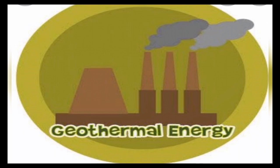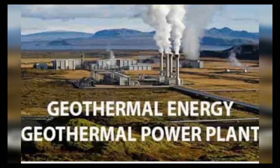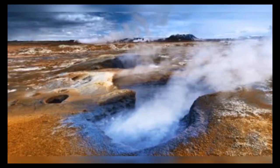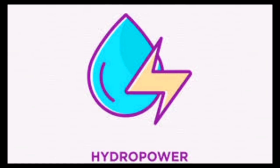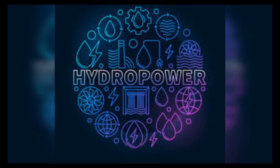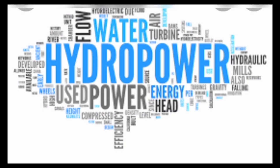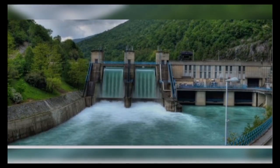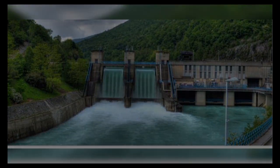Geothermal energy is the energy harnessed within the earth. The word geothermal comes from the Greek words geo meaning earth and therm meaning heat. It is a renewable resource because heat is continuously produced inside the earth. Hydropower electricity is electrical energy produced through the power of moving water. It is obtained from the gravitational movement of water and generates electricity by using a dam or diversion structure to alter the natural flow of a river or other body of water.